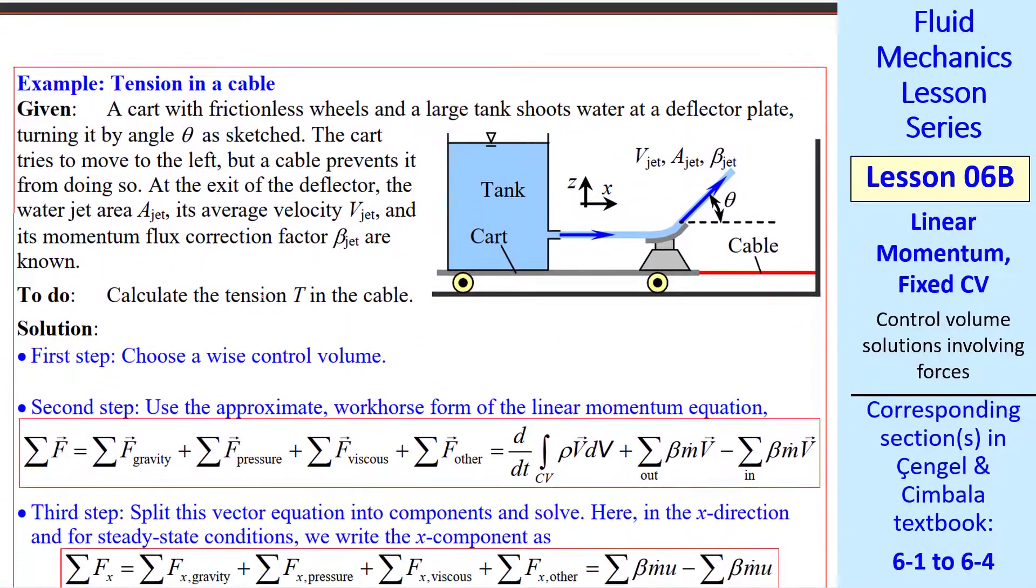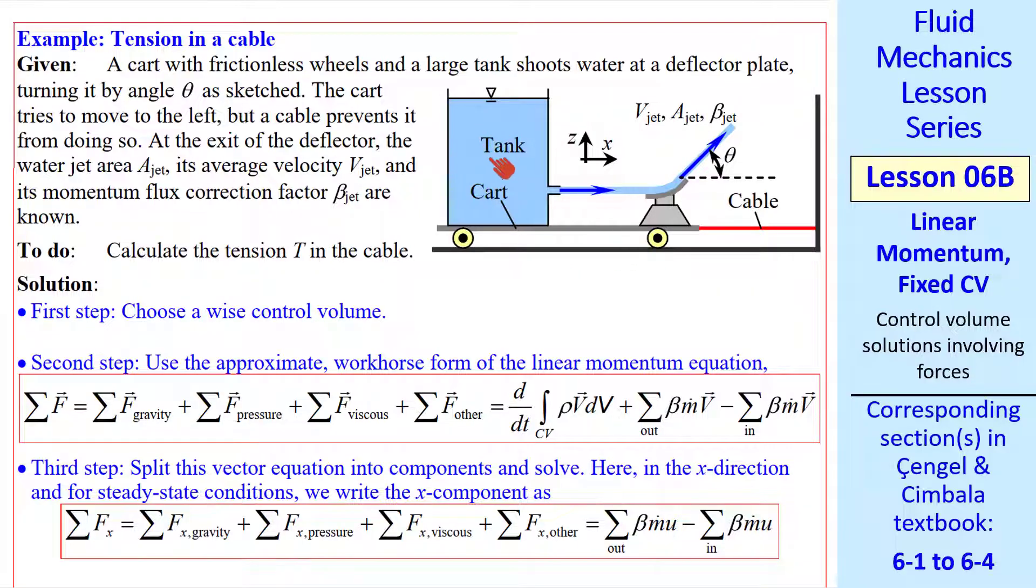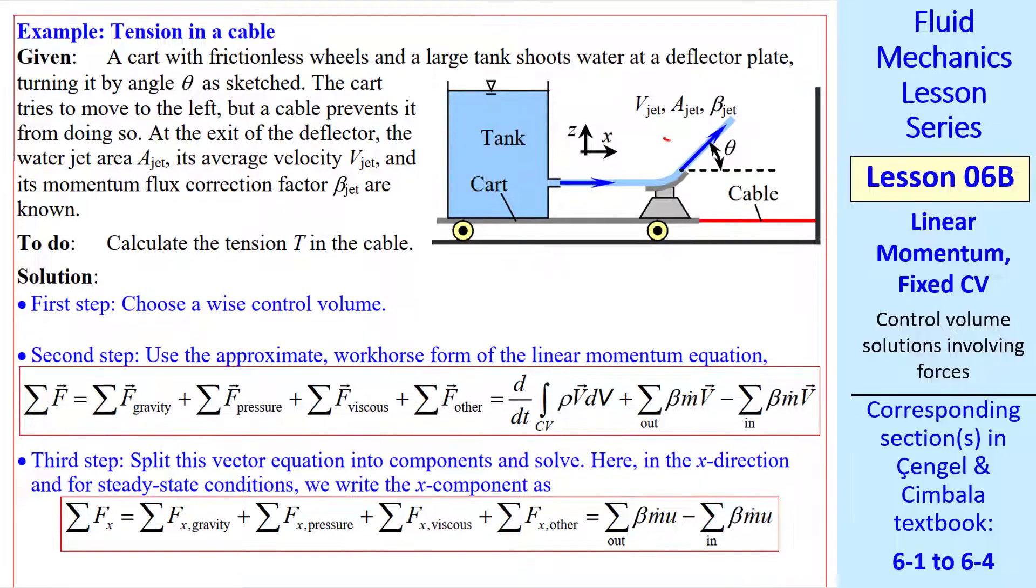Let's look at another example, tension in a cable. A cart with frictionless wheels, and a tank of water shoots water at a deflector plate. It shoots out at some angle, theta, and this jet has a speed, an area, and a beta. There's a cable holding this cart in place, attached to a wall. We'll ignore friction in the wheels. Hopefully you can see that this jet is acting like a rocket exhaust that's trying to push the cart to the left, but the cable is holding it in place. We want to calculate the tension in the cable. As always, the first step is to choose a wise control volume. Well, obviously, I want to cut through the jet. I'll go underneath my frictionless wheels, around the tank. And as we've done before, I'll pick a control volume just under the surface of the water, where this will be our inlet, and the jet will be our outlet.